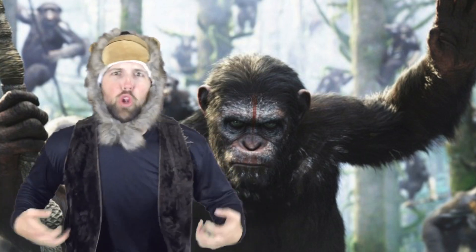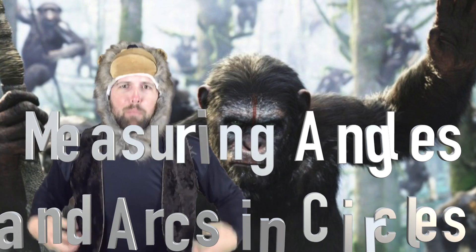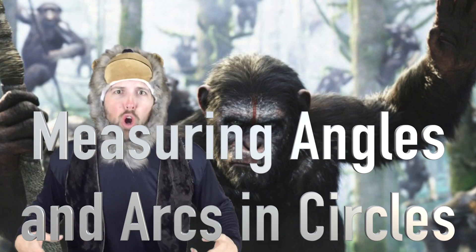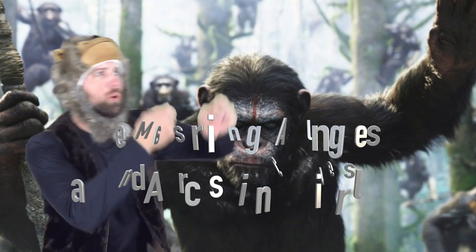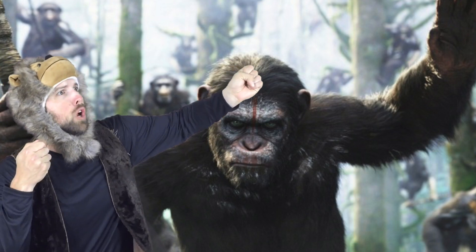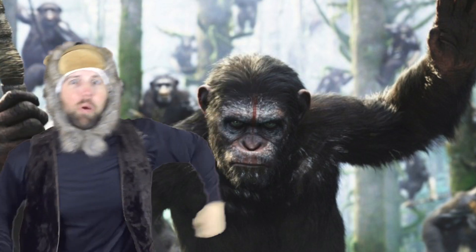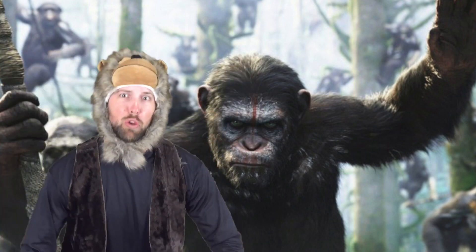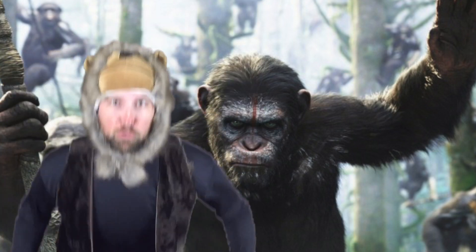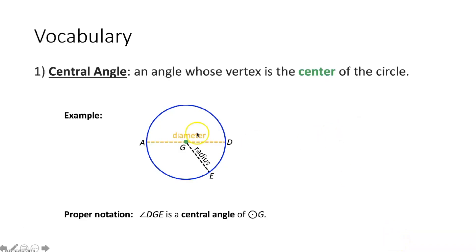It's me, Caesar the Circle Lake, talking to you about measuring angles and arcs. We always use angles when we're firing our bow and arrows at the evil humans. First thing we're talking about is a central angle — that's an angle whose vertex is the center of the circle.